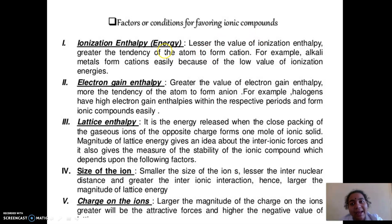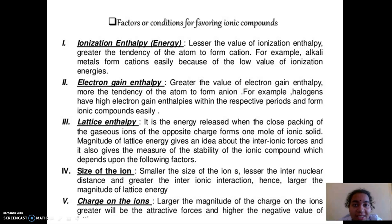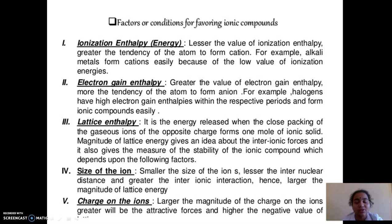If the ionization energy is less, it will favor ionic bond formation. For example, alkali metals have low ionization energy compared to other elements. Moving down the group, the size increases and ionization energy decreases. So if there is low ionization energy, the elements will form cations easily and will form ionic bonds easily. The first condition is low ionization energy.